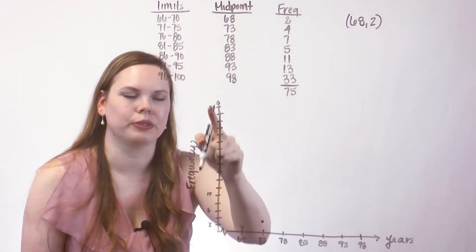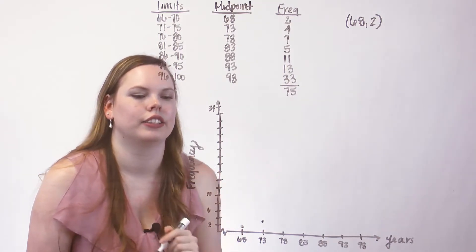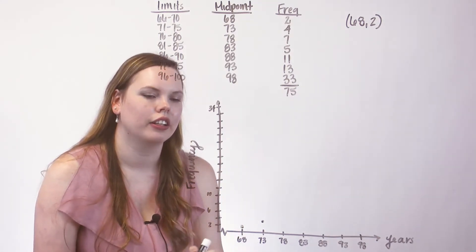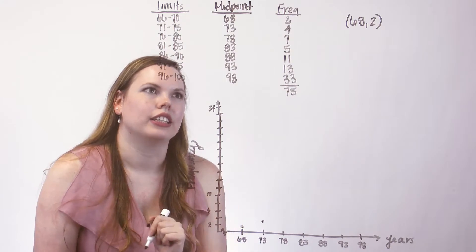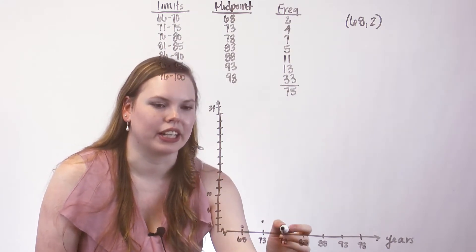I'm counting by twos once again on this vertical axis. So there's a 2 right here. This one's at 73, 4. 78, 7 is my next one.